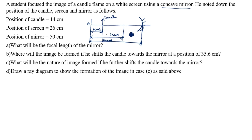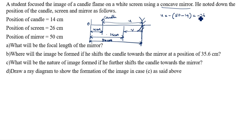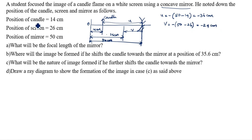Now, how do we find the values of u and v? The distance from the candle to the mirror is u, and from the screen to the mirror is v. Since u is always negative, u equals negative of (50 minus 14), which equals minus 36 centimeters. For v, this side is negative, so v equals minus of (50 minus 26), which equals minus 24 centimeters.